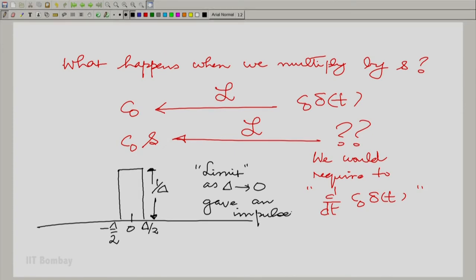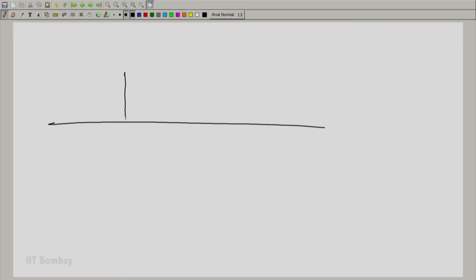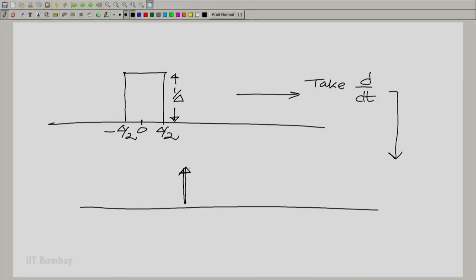Now, let us take the derivative of this pulse and allow for impulses in the derivative. You know, because the derivative does not exist in the true sense. There are discontinuities here. Suppose, we take d/dt of this. Let us draw it again. How would it look? It would have two impulses. One impulse of strength plus 1 by delta at minus delta by 2. I am expanding the situation. And a second impulse of strength minus 1 by delta at plus delta by 2. So, these are impulses.